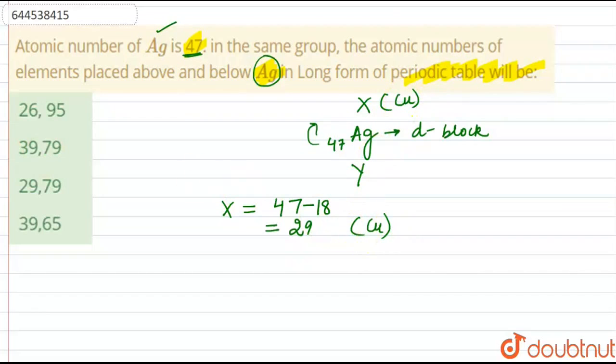So now moving on to Y. To find out Y, what we will do? We will simply add 18 to this 47, that is 47 plus 18, which is further equals to 65. Which is Tb, that is terbium.